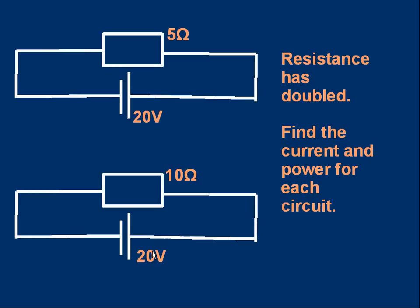Now, if that doesn't make much sense, I hope this example will help you. Let's look at these two circuits. In the top circuit, we've got a 5 ohm resistor. In the bottom circuit, we've got a 10 ohm resistor. And we've both got 20 volts supplying the resistor. We've doubled the resistance. The top resistance is only 5 ohms, and the bottom one is 10 ohms. So, we're going to see what the effect of doubling the resistance is. Resistance has doubled. Here's one for you to try. Can you find the current and the power for each of those two circuits?